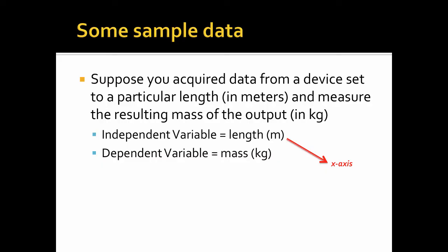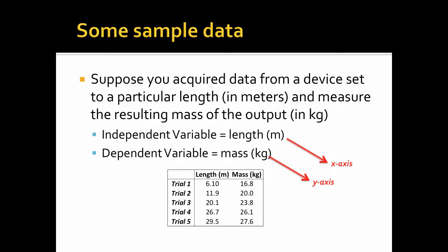The other variable, the mass, we measure that after we've cut this to a particular length. Therefore, it depends on the length we choose, and it will become our y-axis and is our dependent variable. Here's the data that we got from doing the experiment over and over. Five trials, as a matter of fact. We'll keep track of this the entire time, and we'll use this particular data.